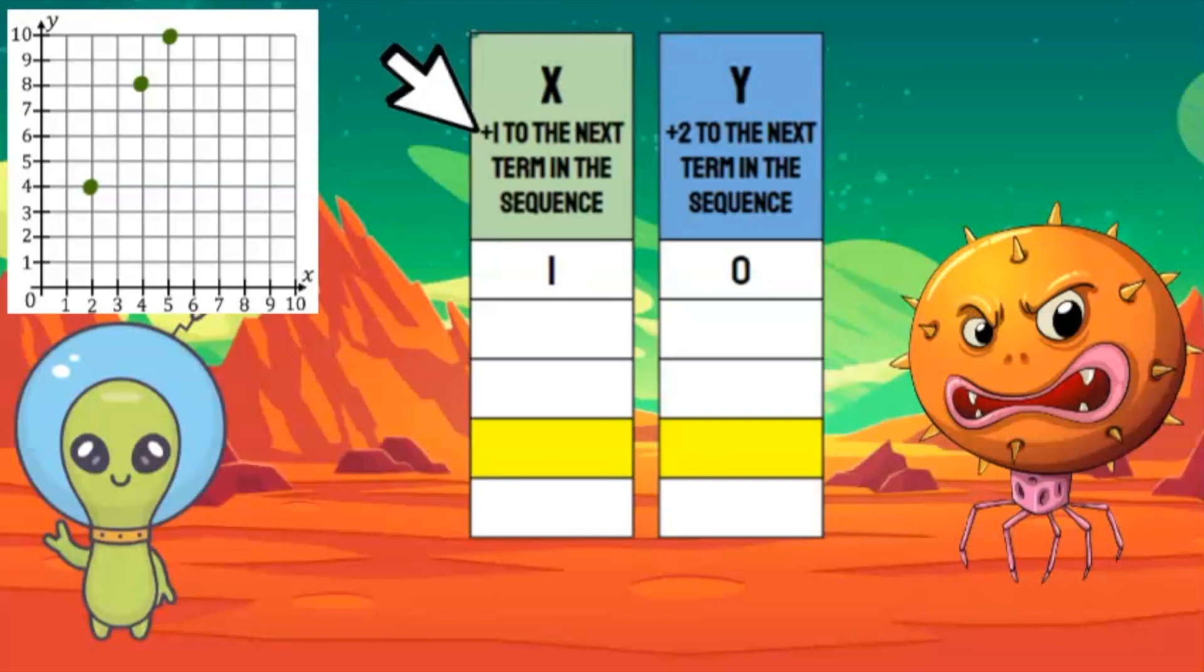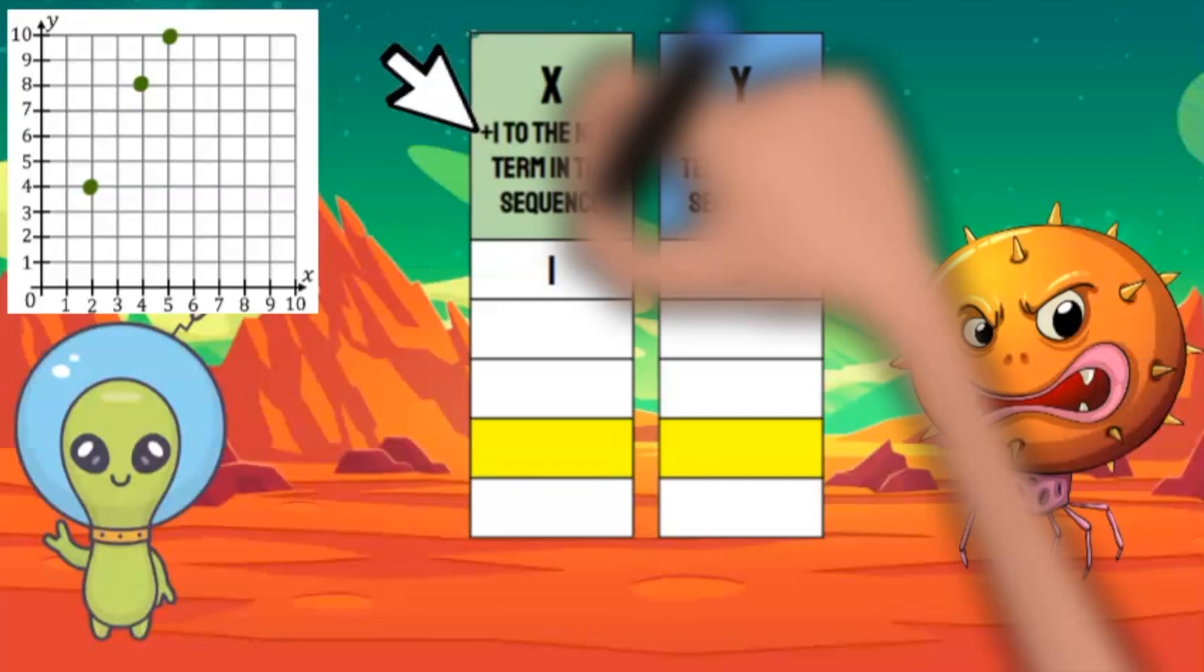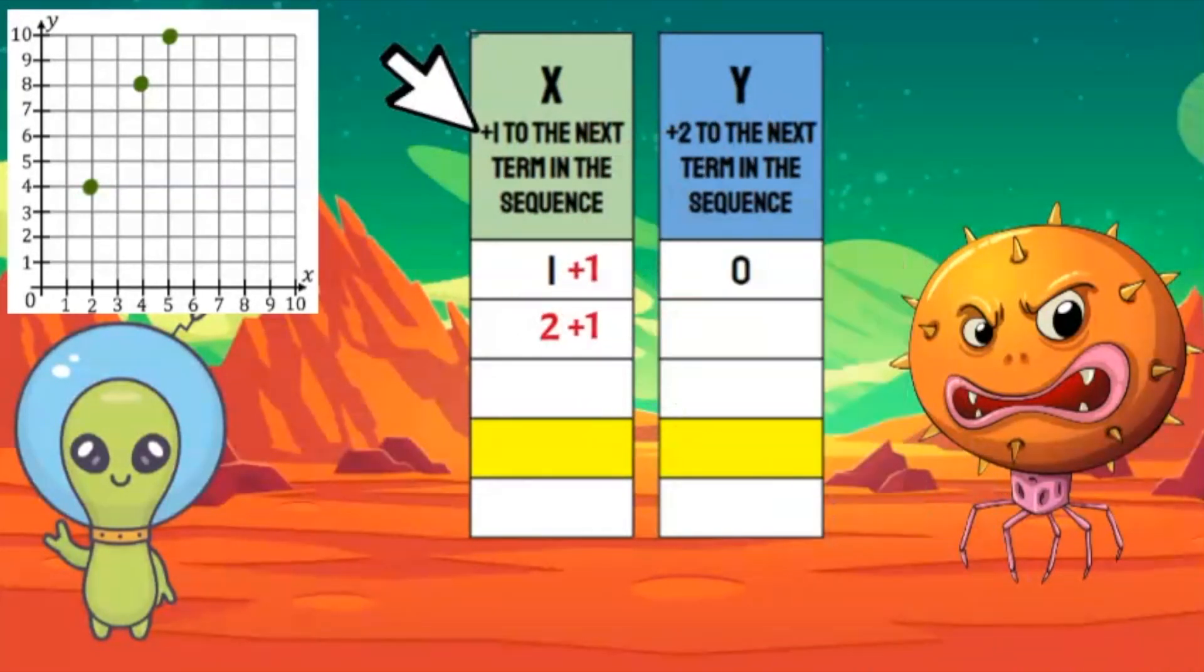The X coordinate can be found by adding one. One plus one is two. Two plus one is three. Three plus one is four, that's the one I need. Four is the X coordinate.